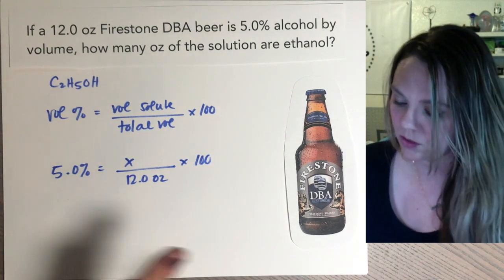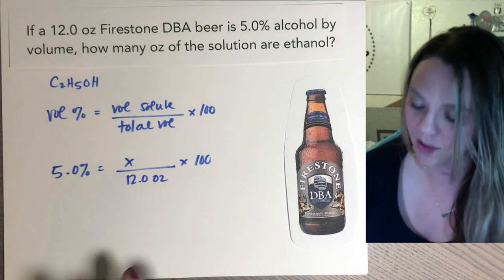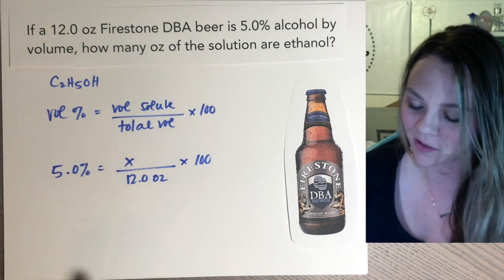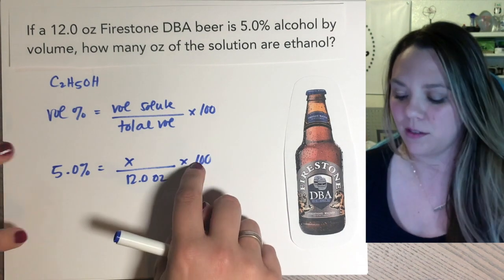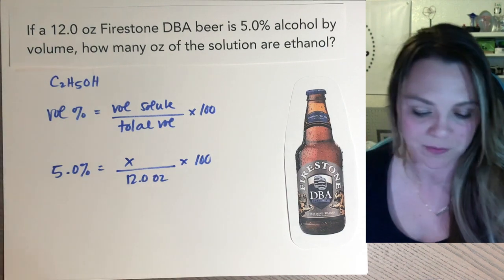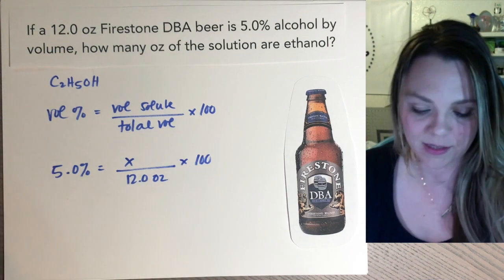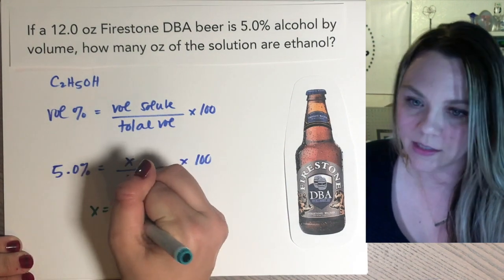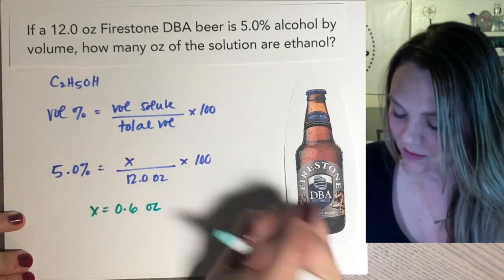You just do some simple math. Depending on how you like to solve your mathematical equations, you can divide by 100 times 12, and you should get that x equals 0.6 ounces.